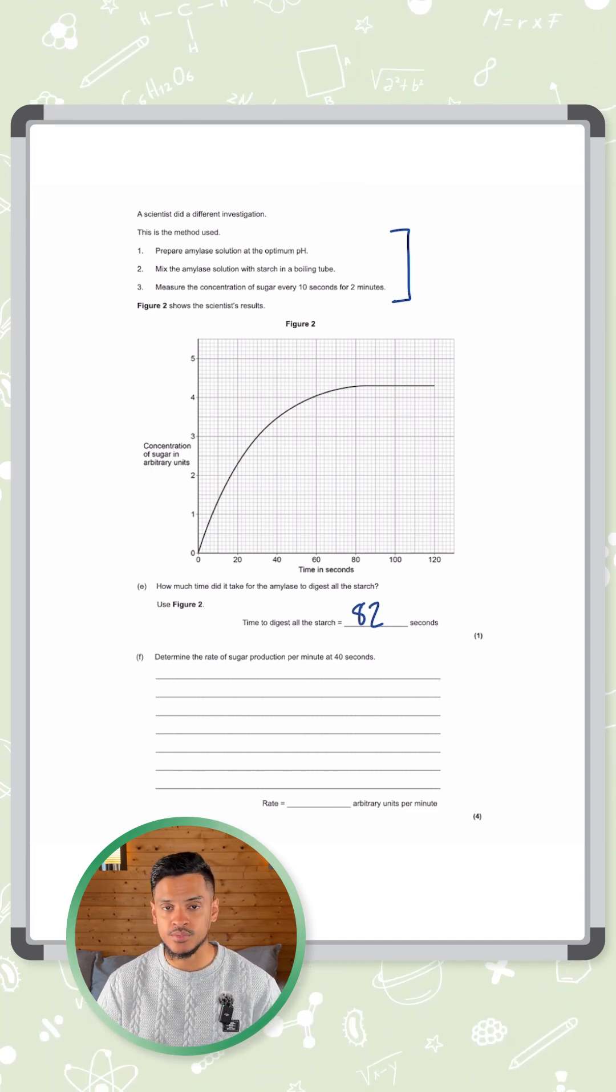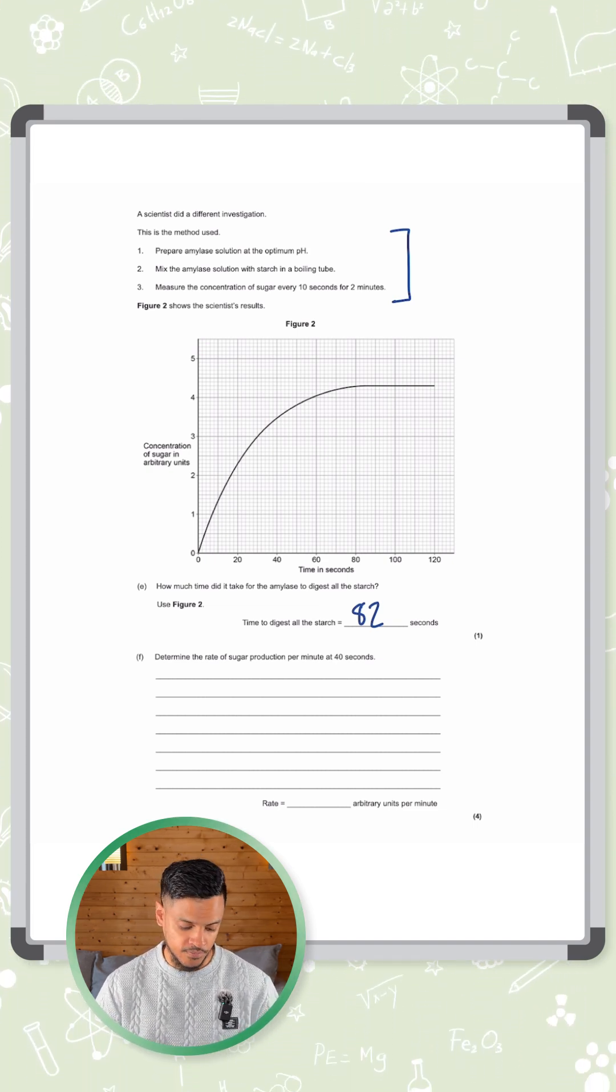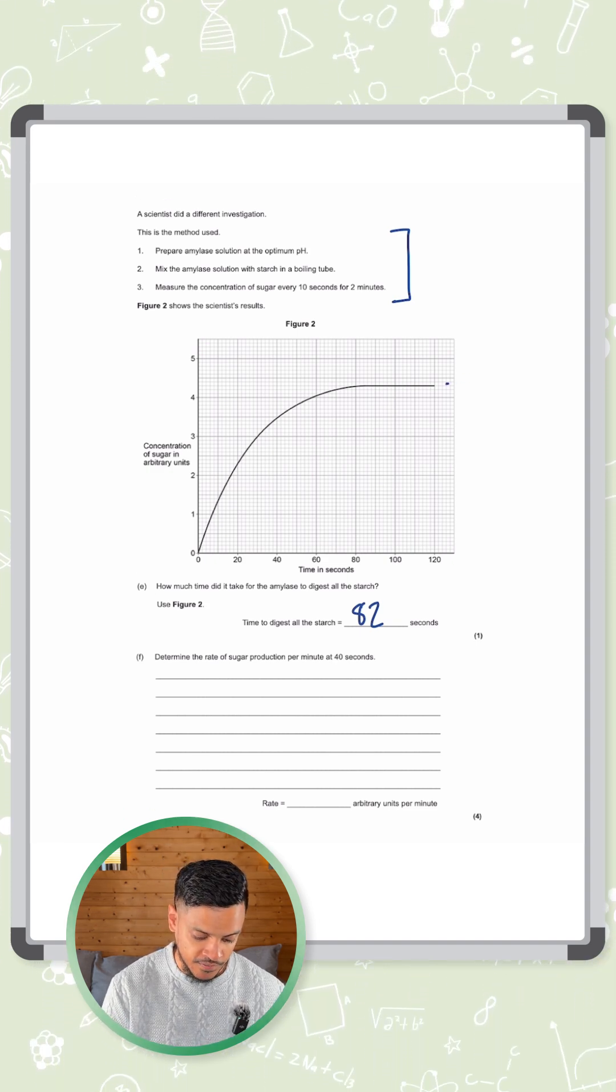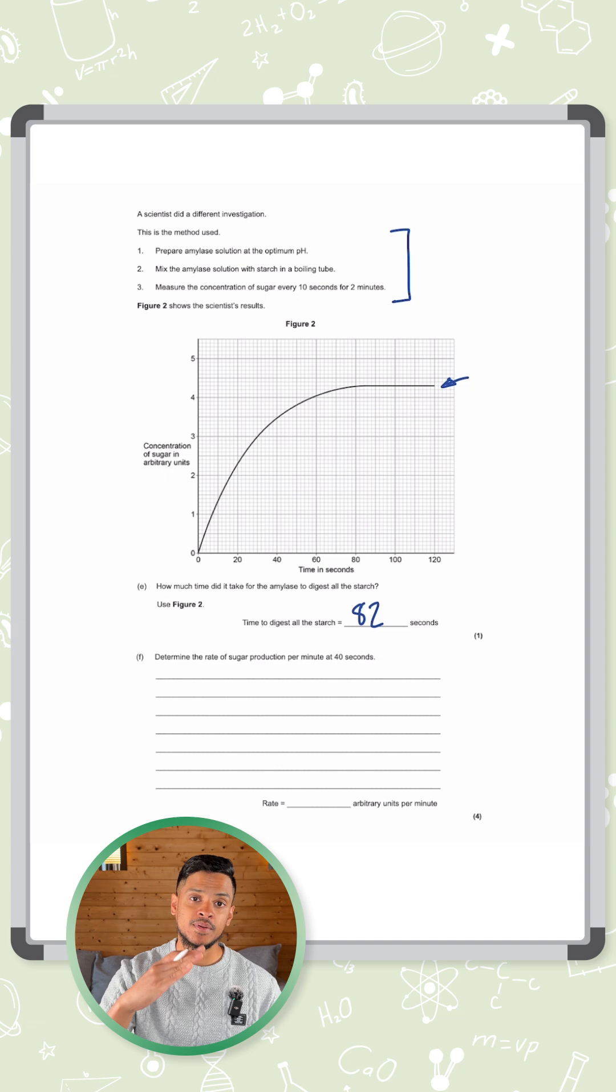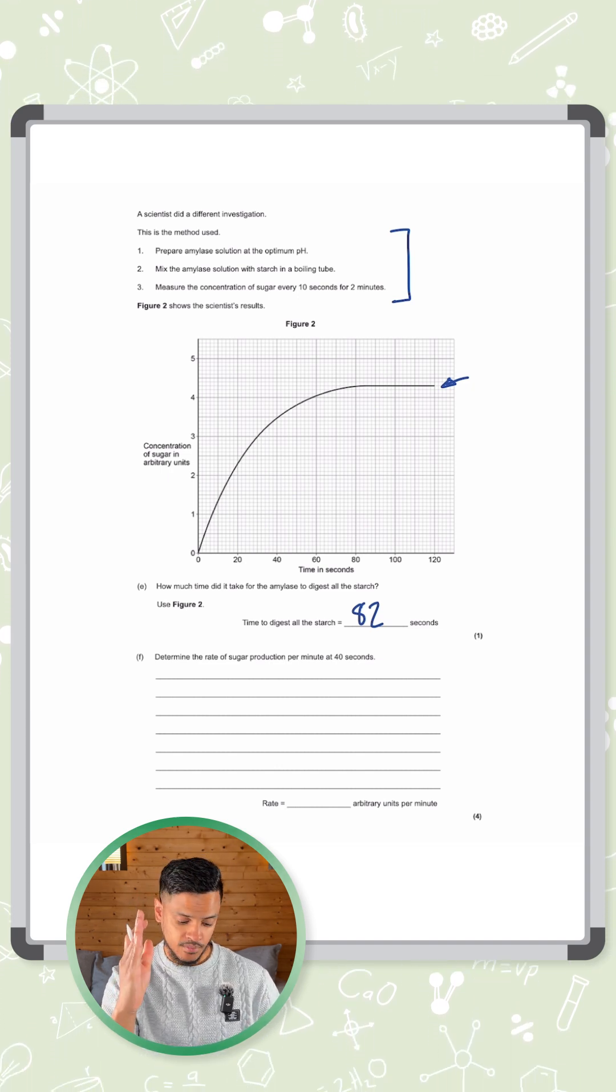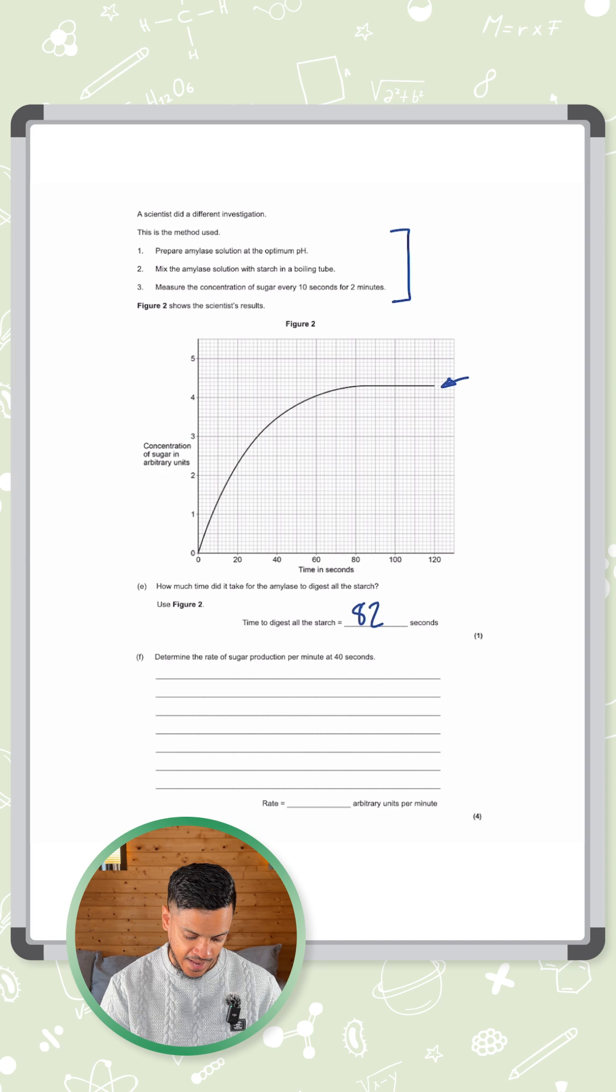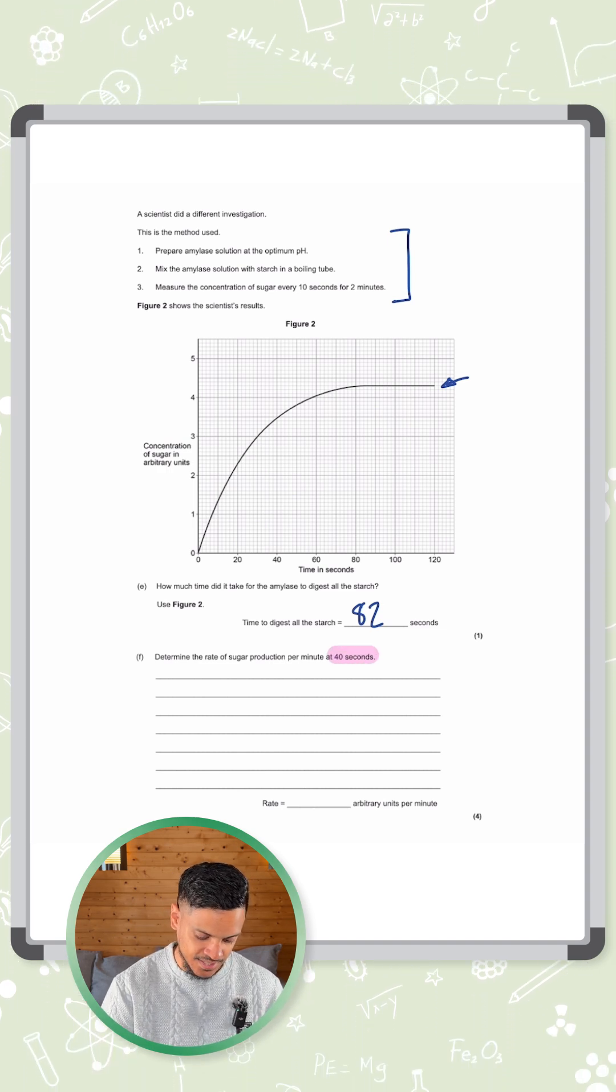The steeper the line is, the faster the rate. This comes up in chemistry as well in a rate of reaction graph. The steeper the line, the faster the rate. That's why right at the end it goes flat because the reaction has stopped. Right at the beginning, the reaction is very fast because it's very steep. We want to find out how steep is it at 40 seconds, it says in the question.